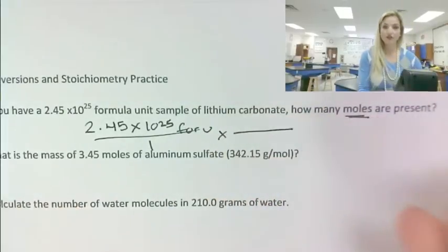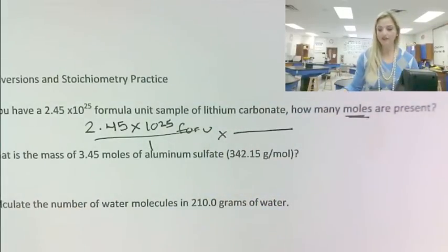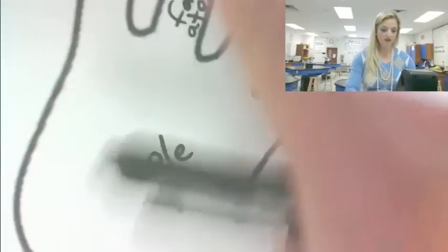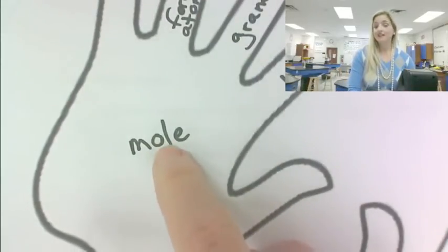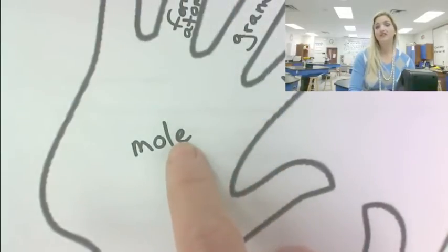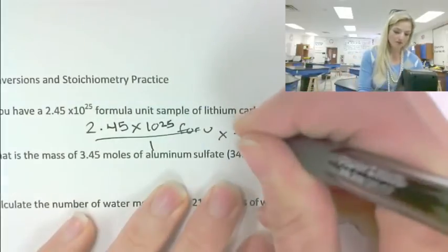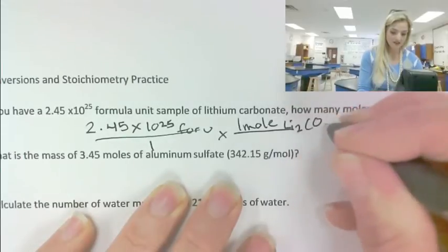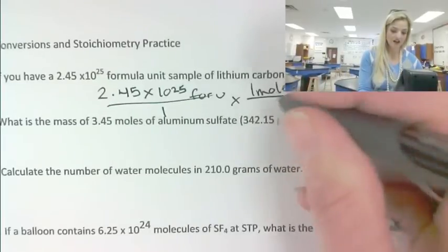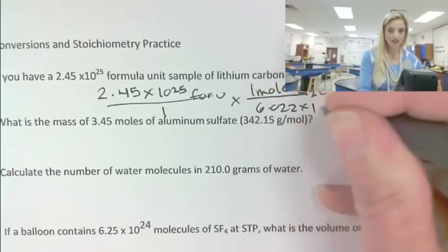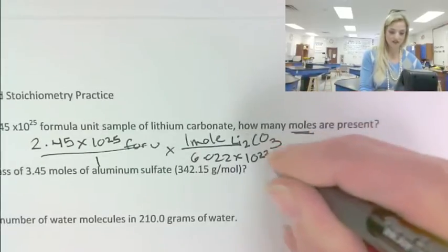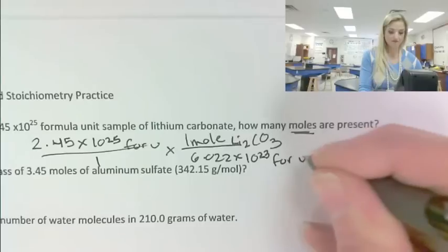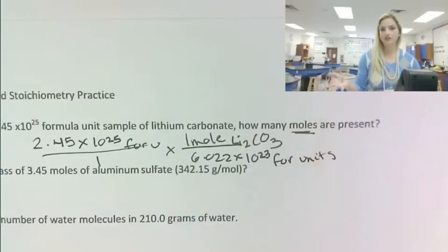They can see that the conversion is one step. And the cool thing about this is, whatever unit you're going to, like if they're pointing to their palm, that is going to be the top of the fraction that they're going to use. So start with formula units, and then moles will be on the top of the next fraction. So one mole of lithium carbonate is going to be 6.022 times 10 to the 23rd formula units. And so there's the work all done.